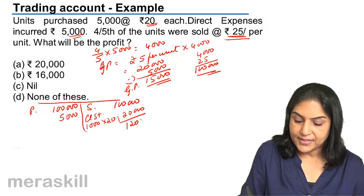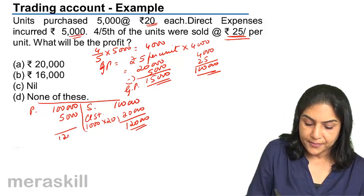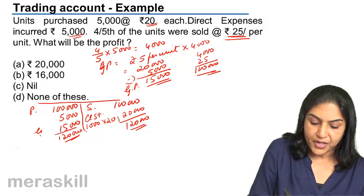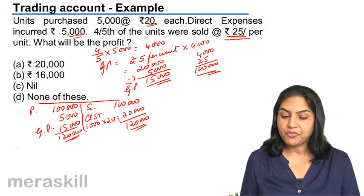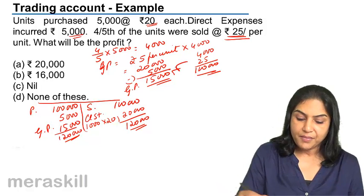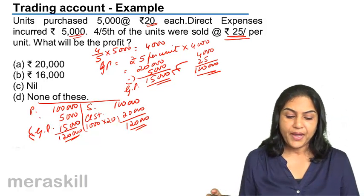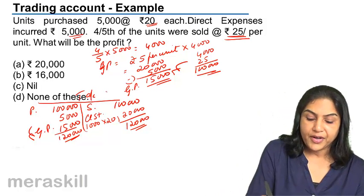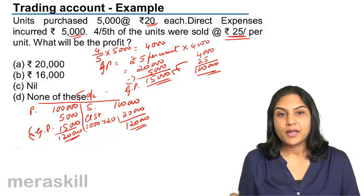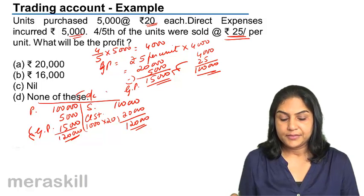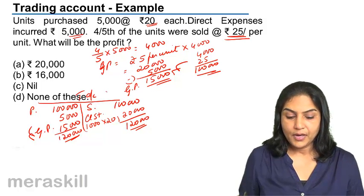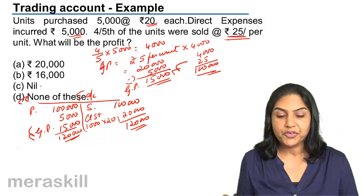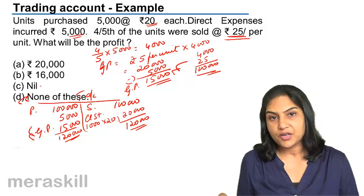If you balance this, you get a total of 1,20,000 and a gross profit of 15,000 — the same result as before. The correct gross profit is 15,000.